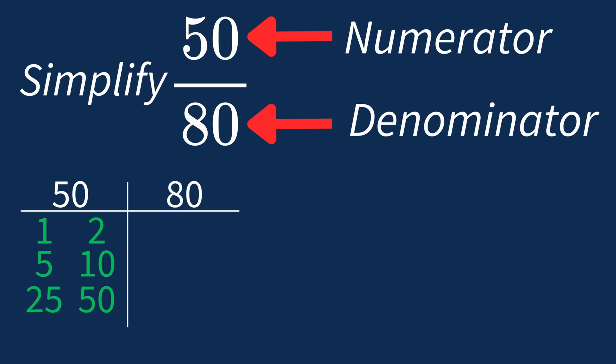For 80, the factors are 1, 2, 4, 5, 8, 10, 16, 20, 40, and 80.